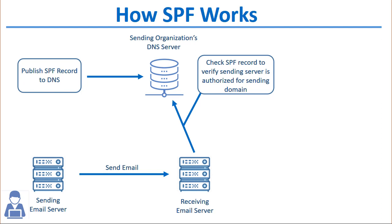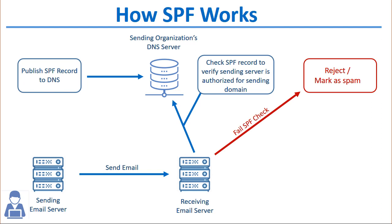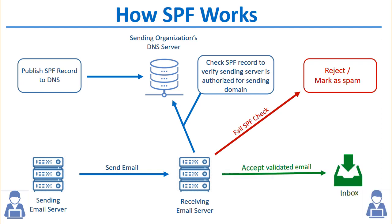If the SPF record indicates that the server the message came from was not authorized, then Security Gateway can be configured to reject the message, mark it as spam, or quarantine it. If the SPF record lookup passes verification, then the message is accepted and delivered to the receiving mail server and on to the user's inbox.